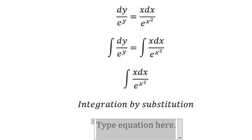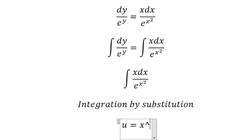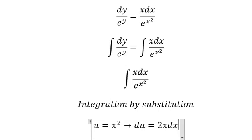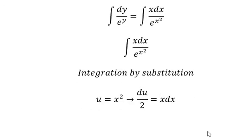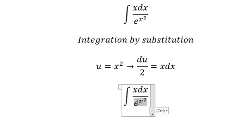So we put u equals to x square, du equals to 2x dx. Because we don't have number 2 in here, so we divide both sides by 2. So this one in here, we change for u. This one in here, we change for du over 2.